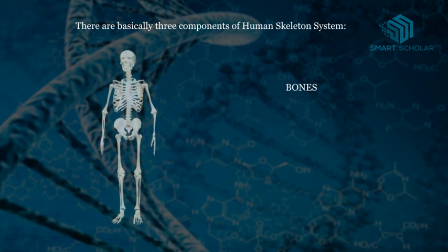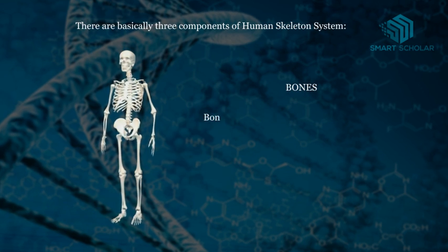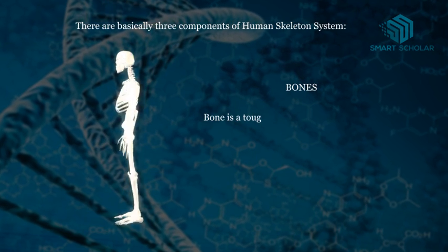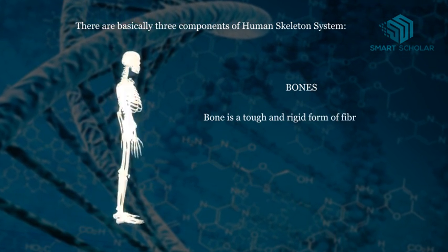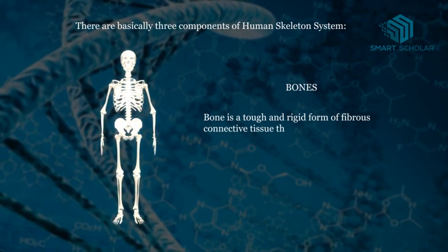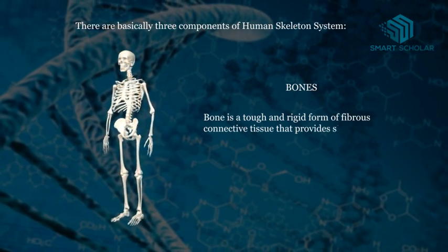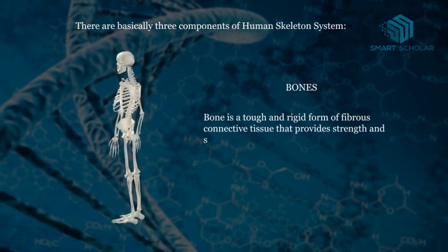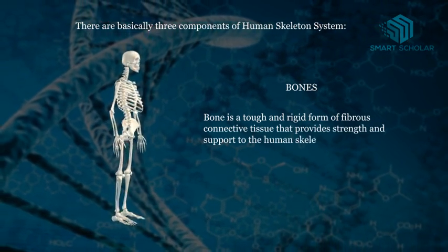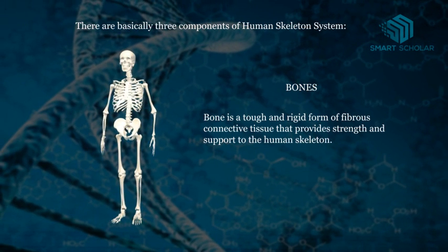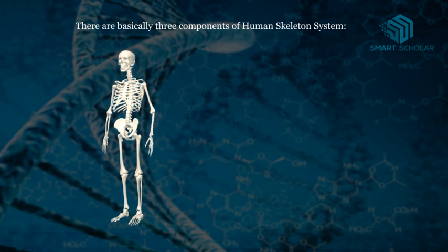First let us learn about bones. Bone is a tough and rigid form of fibrous connective tissue that provides strength and support to the human skeleton. Bones are 206 in total number.